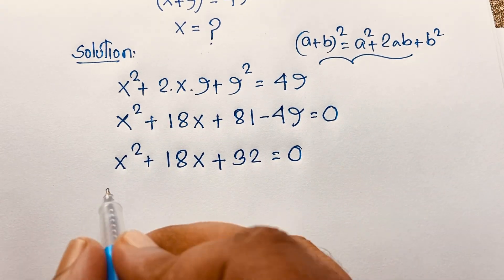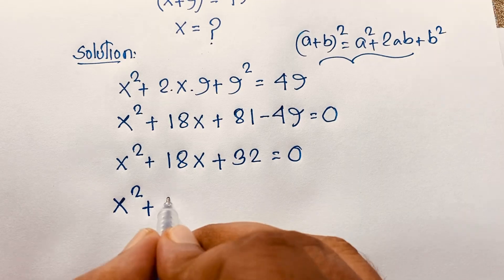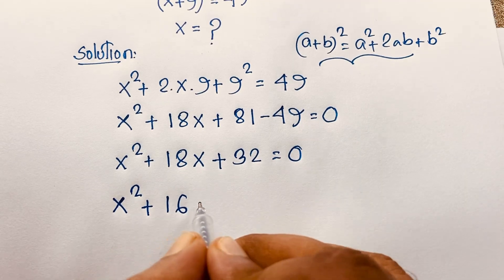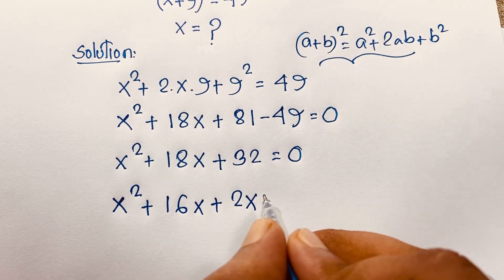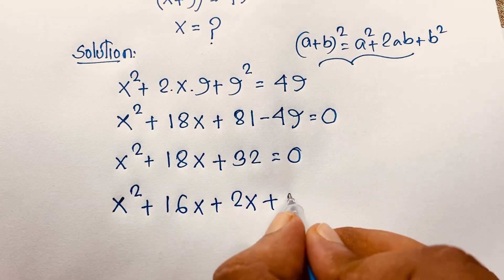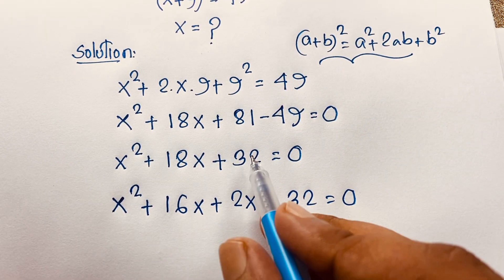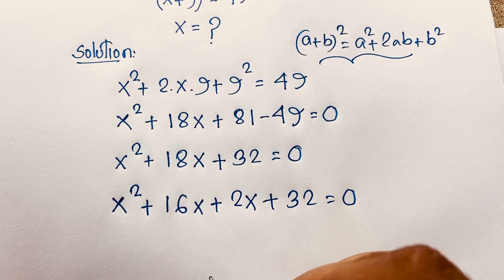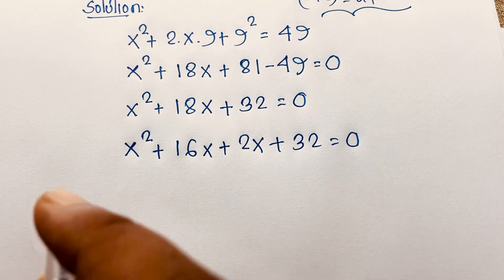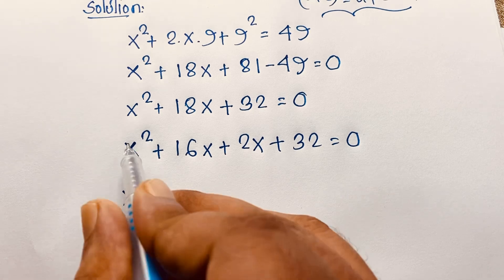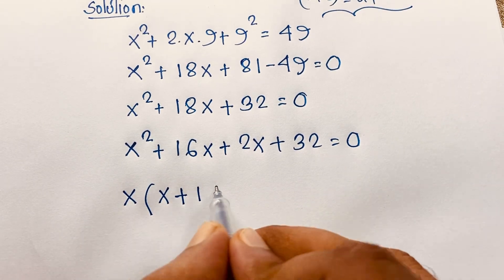Then here, x squared plus 18x, I will split this as 16x plus 2x plus 32. I use the middle term splitting method. 16 times 2 is 32, and 16 plus 2 is 18. Now here, x is common. So if I take x as common, this divided by x gives x, and this divided by x gives 16.